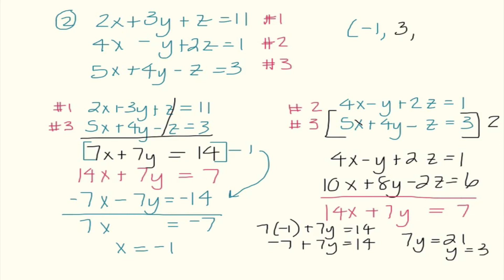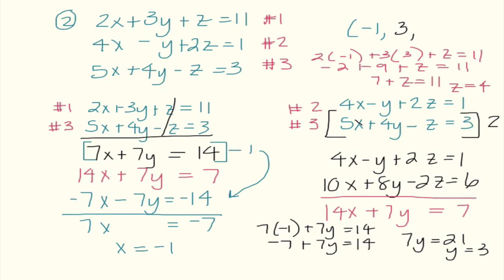Lastly, I need to find z, so I'll use the first original equation: 2 times negative 1 plus 3 times 3 plus z equals 11. That gives negative 2 plus 9 plus z equals 11, so 7 plus z equals 11, and z equals 4. Let me check: negative 2 plus 9 is 7, plus 4 is 11 — that works. Negative 4 minus 3 is negative 7, plus 8 is 1 — that works. Negative 5 plus 12 is 7, minus 4 equals 3 — they all work. The biggest caution: take your time and check your work.